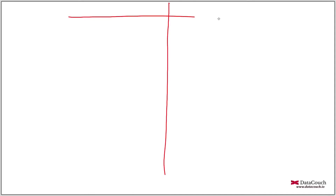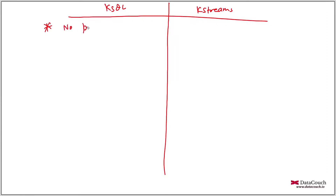Now we are going to discuss the differences between KSQL and KStreams. This is a very common question when we talk about stream processing in Kafka — when to choose KSQL and when to choose KStreams. The very first difference is programming: in KSQL you don't have to do programming, no programming in Java or Scala.